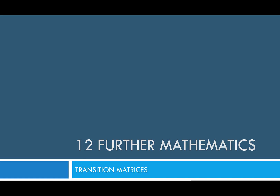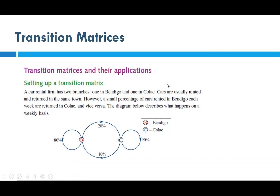Let's have a look at a scenario. A car rental firm has two branches, one in Bendigo and one in Colac. Cars are usually rented and returned in the same town, however a small percentage of cars rented in Bendigo each week are returned to Colac and vice versa. The diagram below describes what happens on a weekly basis.